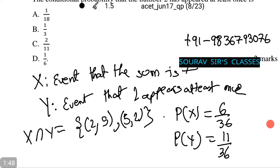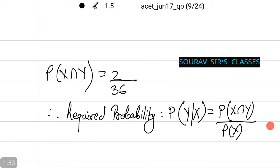Therefore, we find probability of X intersection Y. Probability of X intersection Y equals 2/36. Therefore, the required probability, P(Y|X), equals P(X∩Y) divided by P(X).